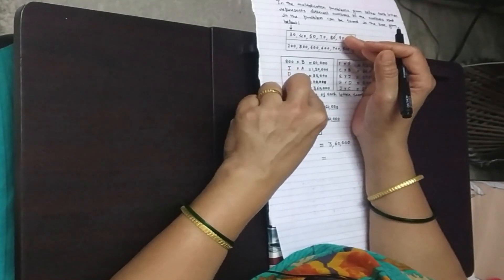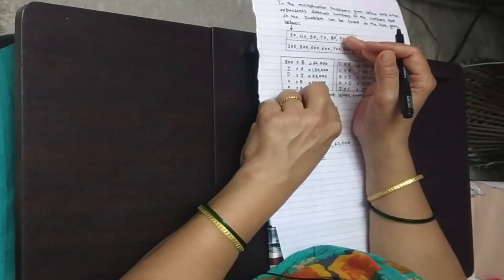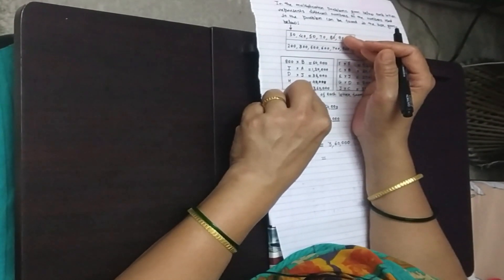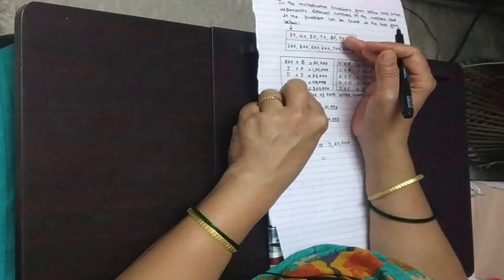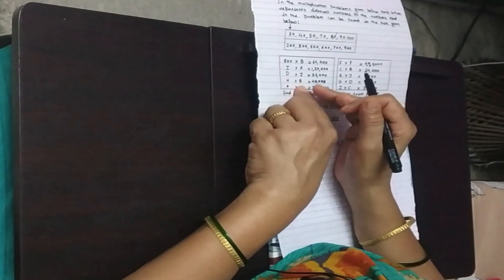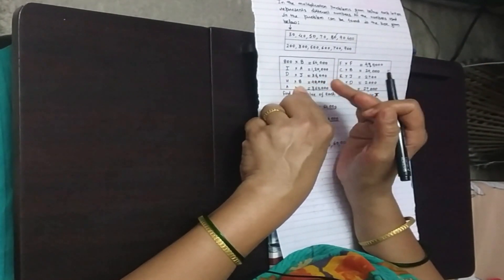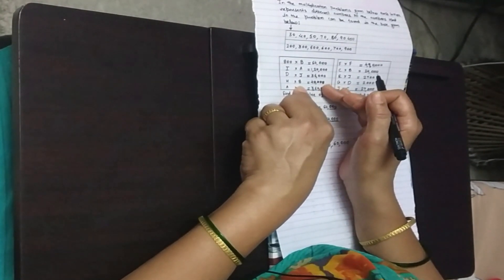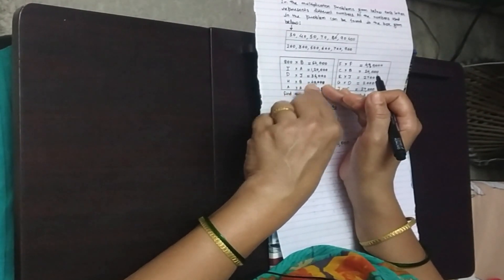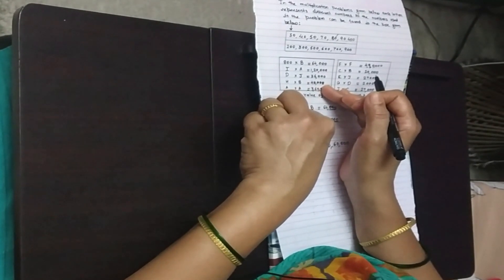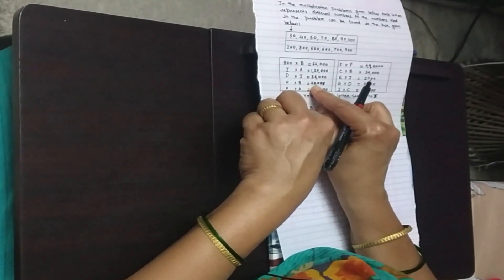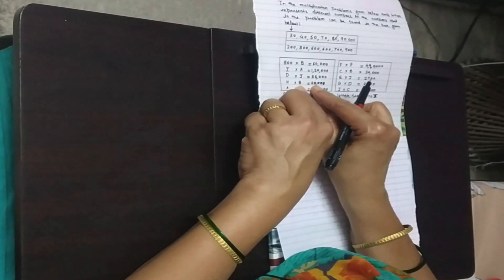Let us see the fourth one: h into b equals 40,000. Since we have already found the value of b, we write h into 80 equals 40,000. Now we will be able to find out the value of h. We know that 8 fives are 40, so 40 is present in the product — and 80 is the value of b.